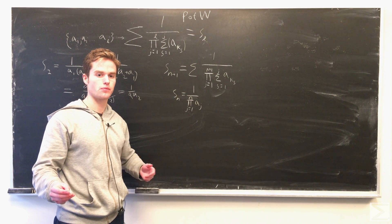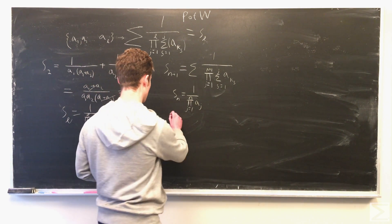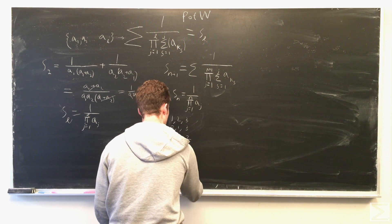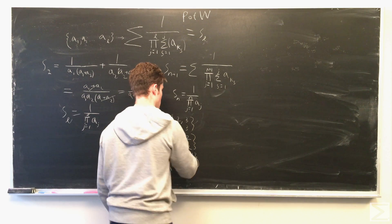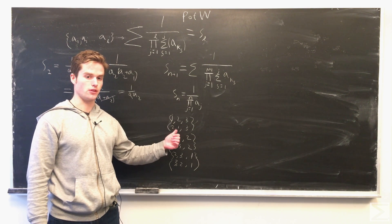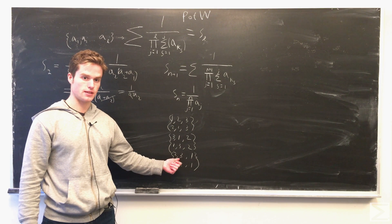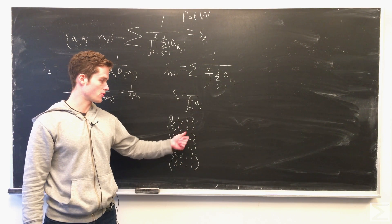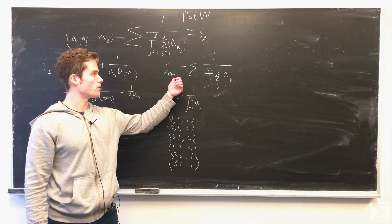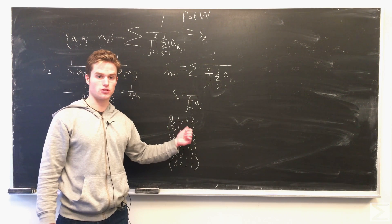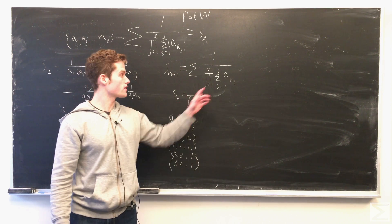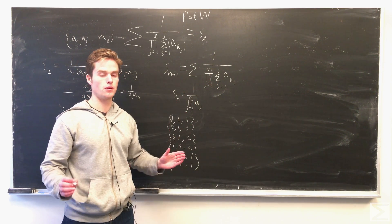For example, for N plus 1 equals 3, this permutation has six different permutations. We're going to divide this up into three different sets: one where 3 is the last number, another where 2 is the last number, and another where 1 is the last number. For each of these sets, the last term in the product is always the same — it's the sum of all the numbers — so we factor that out.